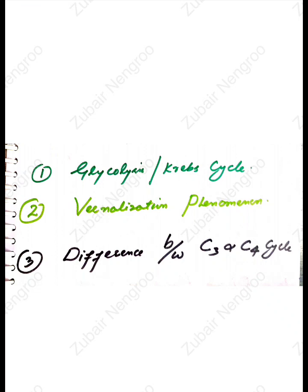For glycolysis and the Krebs cycle, I have also made a trick-based video — I will share that link so you can watch it. The second question is about the vernalization phenomenon — what is vernalization? It is a simple phenomenon and you can do it easily.